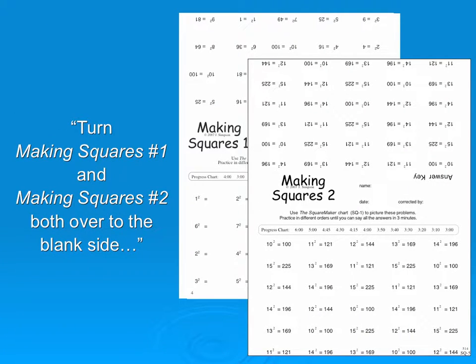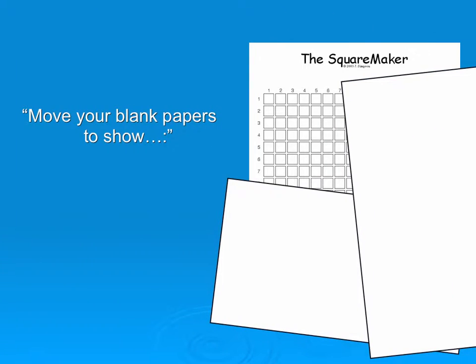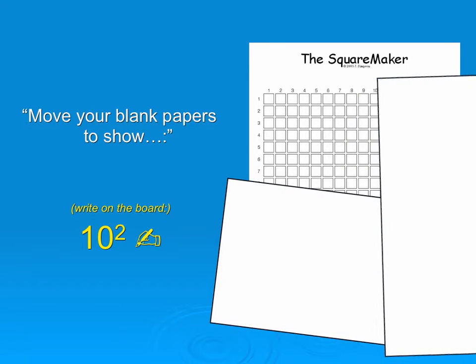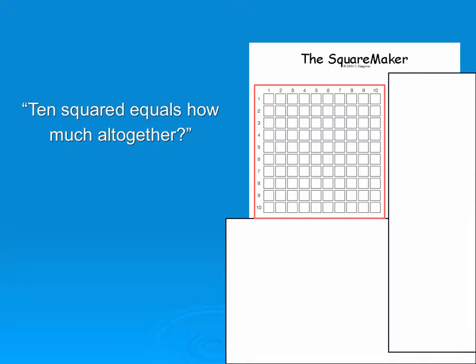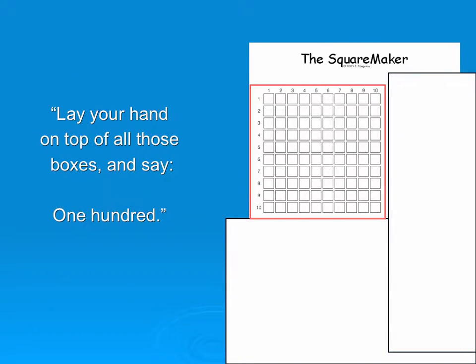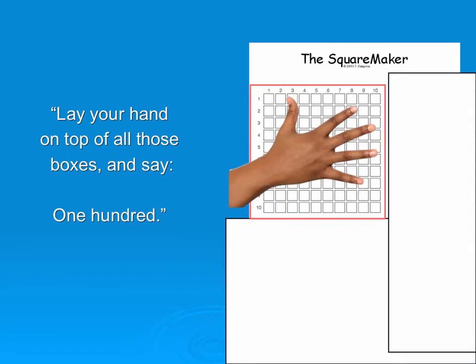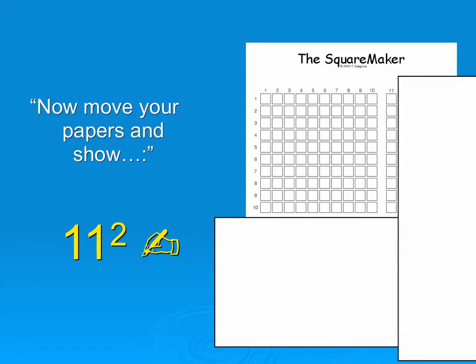Okay everybody, turn Making Squares No. 1 and Making Squares No. 2 both over to the blank side. Move your blank papers to show, and then you write this on the board—you don't say it: 10 squared equals how much altogether. They say their answer and you write it on the board. Lay your hand on top of all those boxes and say 100. Now move your papers and show. Good.